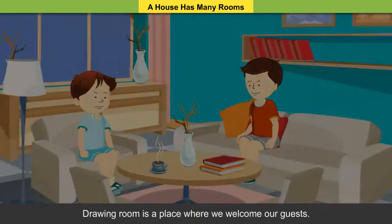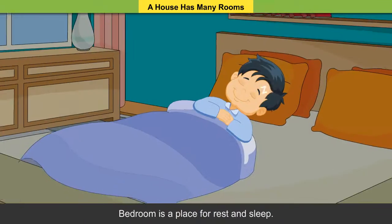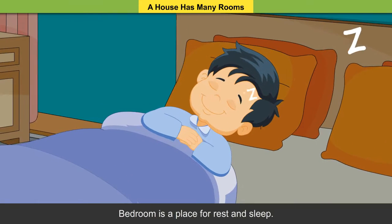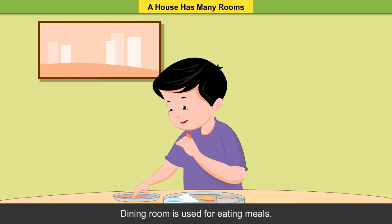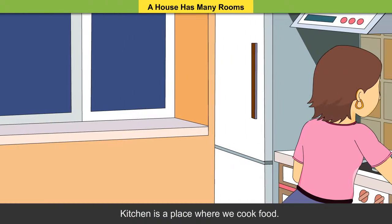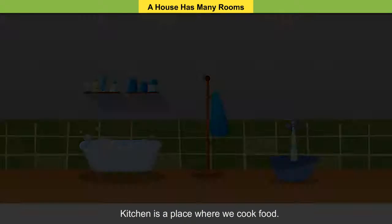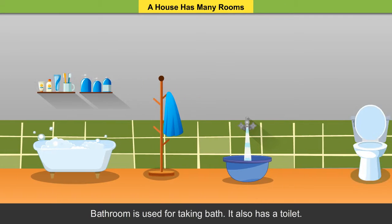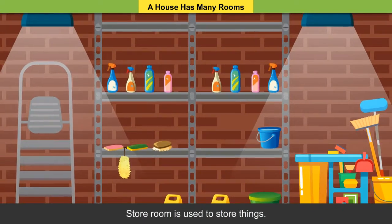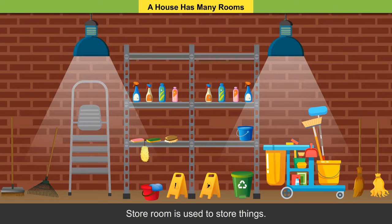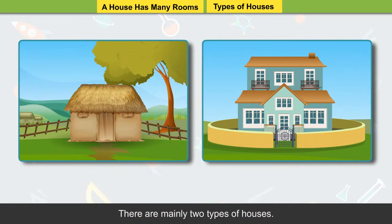The drawing room is a place where we welcome our guests. We also sit here with our family members. Bedroom is a place for rest and sleep. Dining room is used for eating meals. Kitchen is a place where we cook food. Bathroom is used for taking bath and also has a toilet. Storeroom is used to store things.